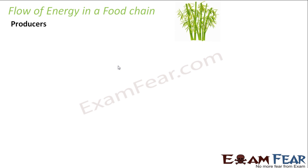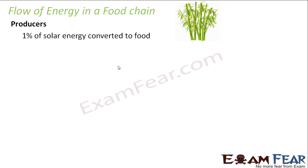Now what happens when a herbivore feeds on the producers, that is the plants? So how do these plants get energy? By the process of photosynthesis. In photosynthesis, they utilize the energy of the sun — that is, solar energy. In the presence of solar energy, they convert carbon dioxide and water into glucose, and then store it in the form of starch. That is how they prepare food. So basically, they are getting energy from solar energy.